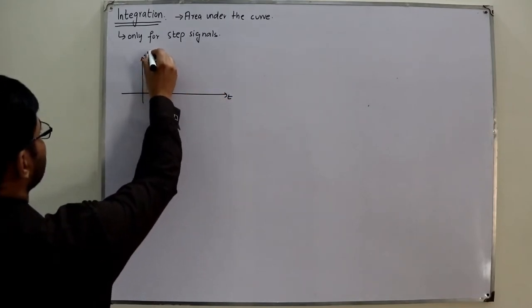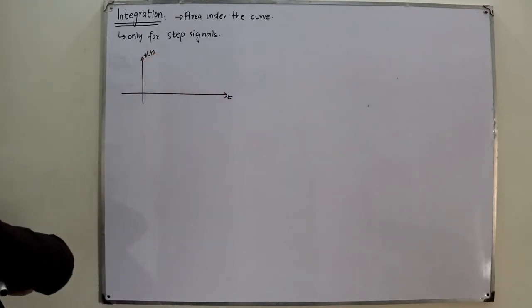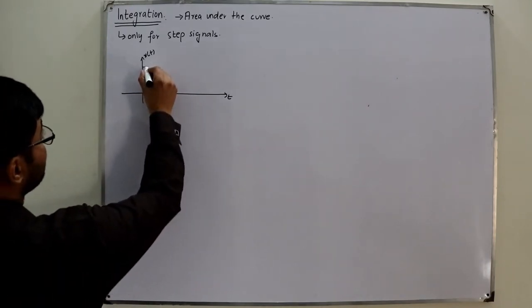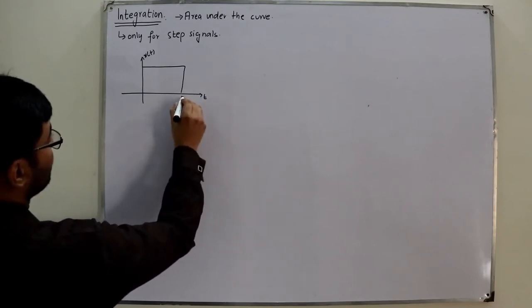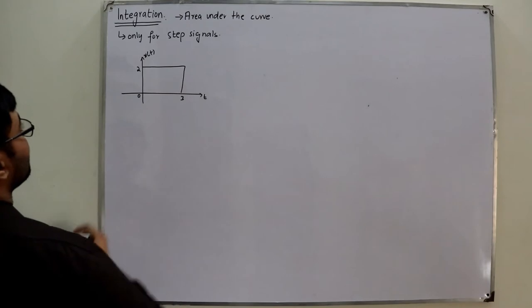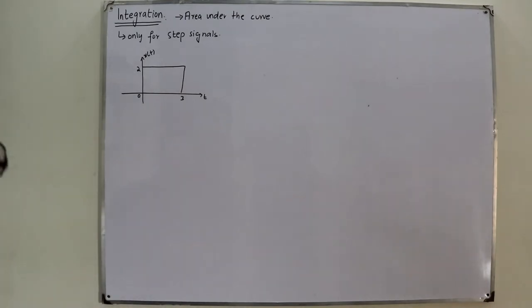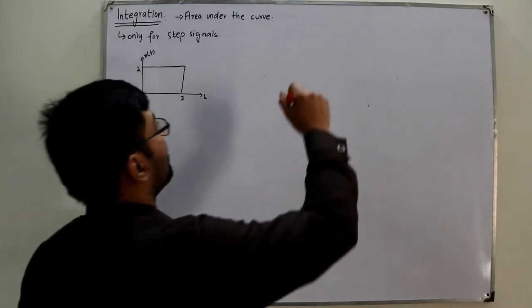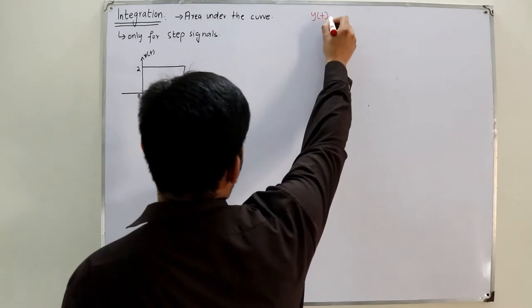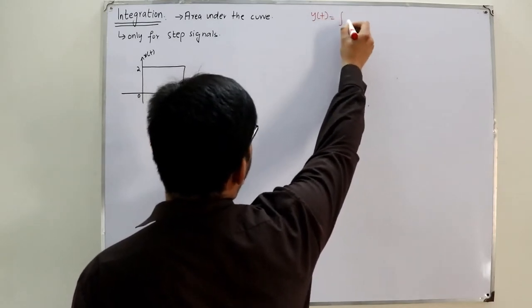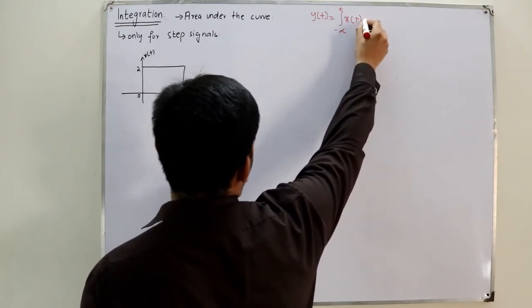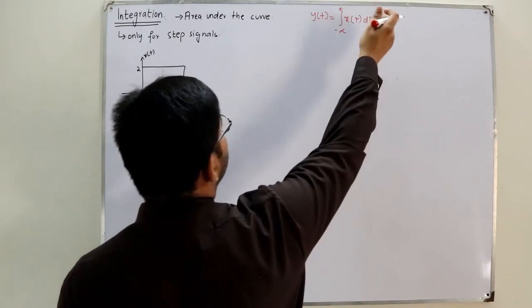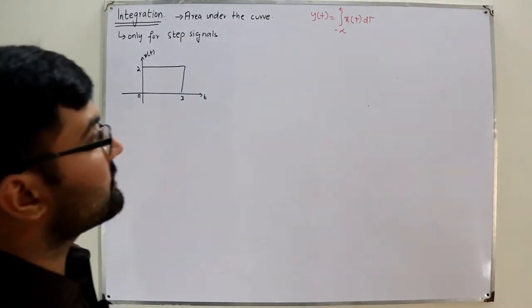This is the t-axis and this is the x(t) axis. The signal is 2 from 0 to 3. We have to integrate this function. I will represent the integral as y(t), integrating x(τ) with respect to τ from negative infinity to some value of t — I use τ as the dummy variable to avoid confusion.